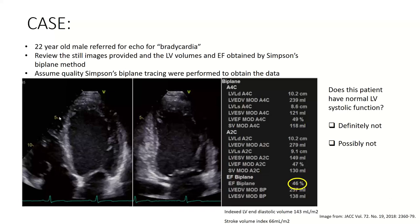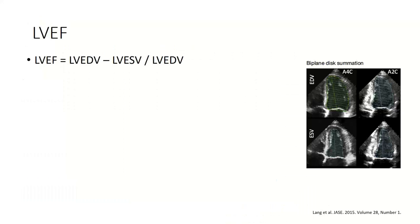The stroke volume index is 66 mls per meter squared, and the indexed LV end diastolic volume is quite high at 143 mls per meter squared on this non-definity contrast tracing. In order to answer this question, we have to remind ourselves of how we actually obtain an LVEF by Simpson's biplane.